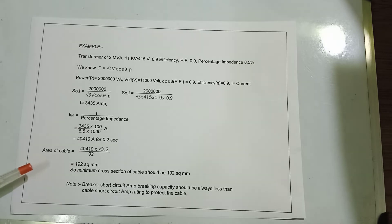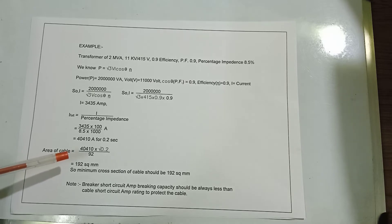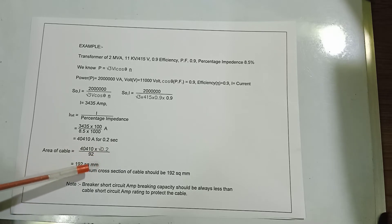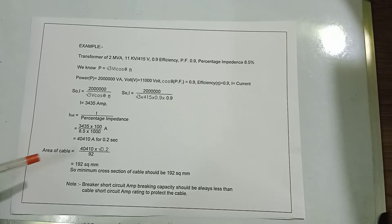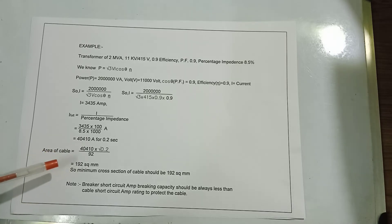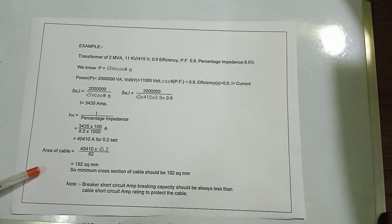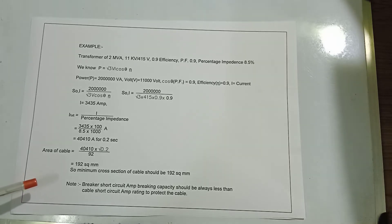The area of cable = 40,410 × √0.2 / 92 = 192 square mm. So the minimum cross section of the cable should be 192 square mm.